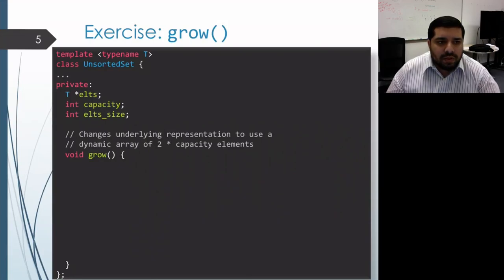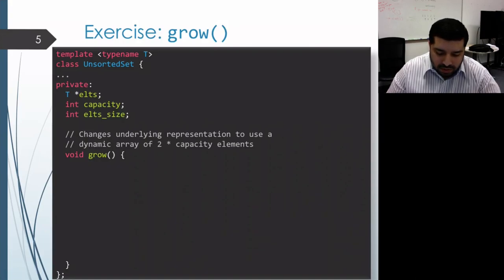Let's take a look at implementing the grow member function for an unsorted set. What this does is it modifies the data representation so that it's using an array that's twice as big as the previous array.